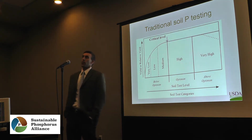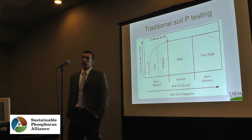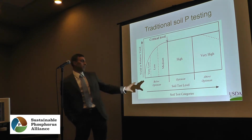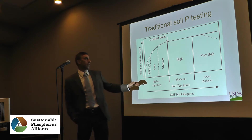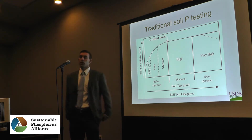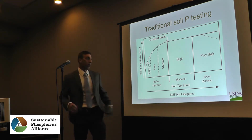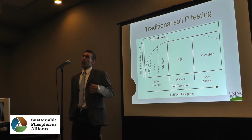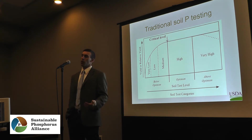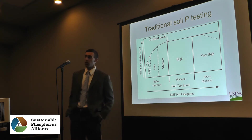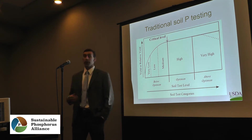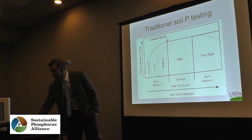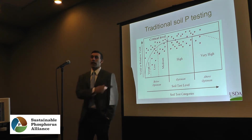Our traditional soil phosphorus testing is empirical. We have a soil test phosphorus level from some type of extractant, and in response to that we have yield or relative yield. As we increase soil test phosphorus concentration, yield increases until some critical level or threshold where additional phosphorus no longer results in improved yield. This is how it's typically shown in a classic fertility textbook.